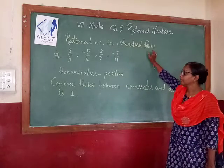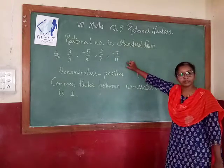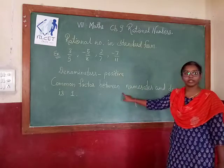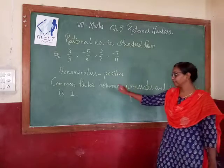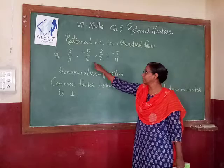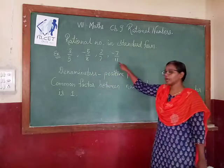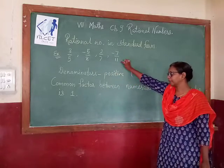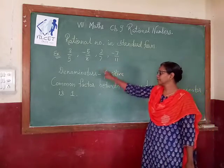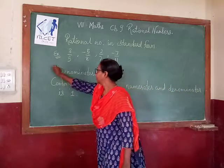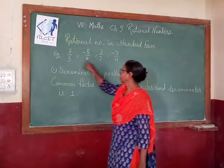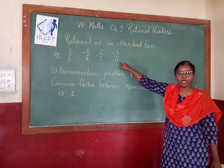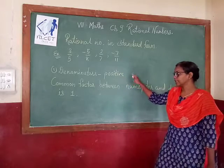If you want to consider any rational number to be in standard form, two conditions should be fulfilled. The first condition is that all the denominators are positive — not a single denominator is negative. If you observe: 5, 8, 7, 11 — they are all positive.